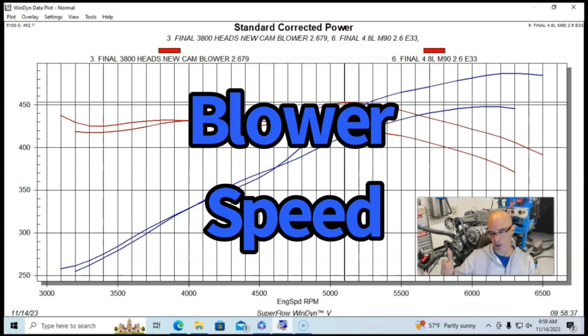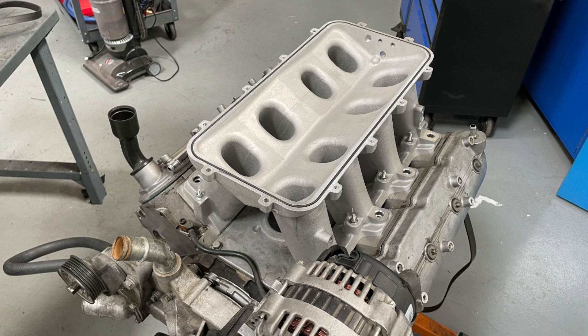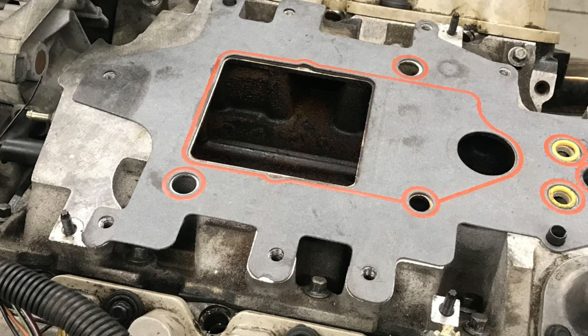I suspect that's from a couple of things. One, the blower is spinning faster because of the 7.5 inch crank pulley. Also, the runner length on the Hi-Ram I think is coming into play here.